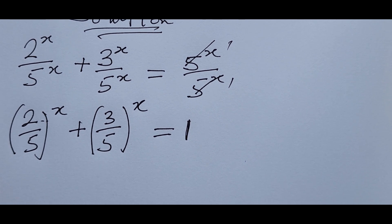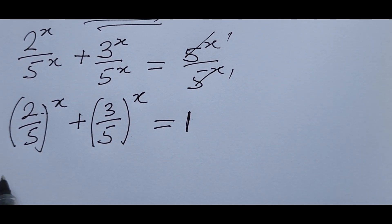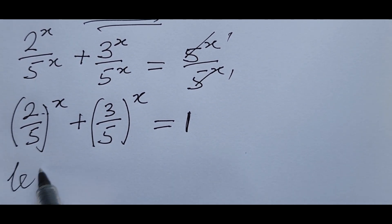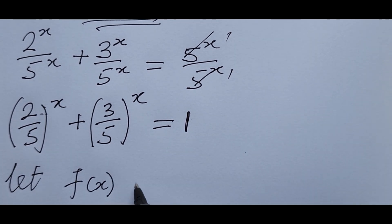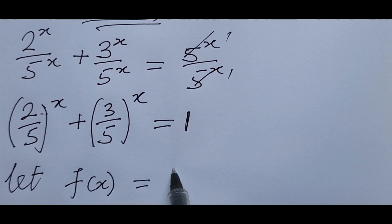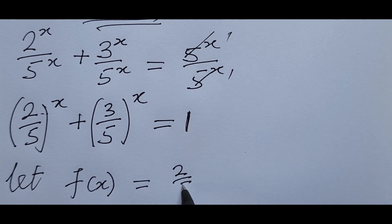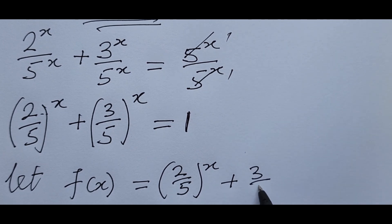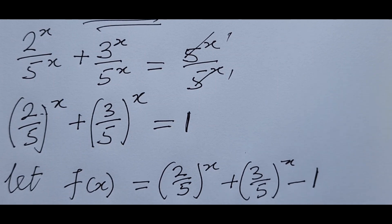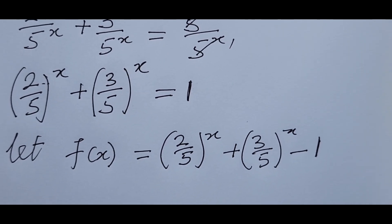At this point, we define f(x) = (2/5)^x + (3/5)^x minus 1. With this, we want to find f'(x) — in other words, we want to differentiate this function.